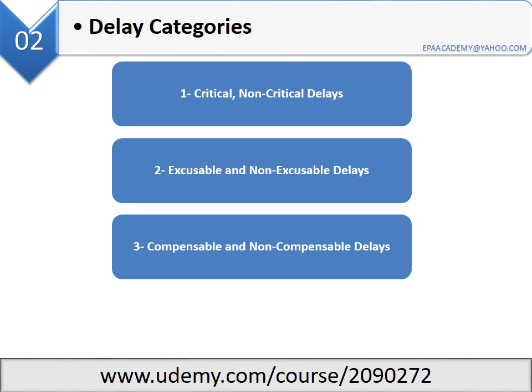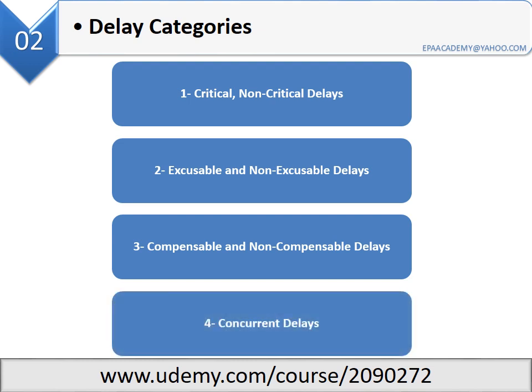Three — compensable and non-compensable delays. Compensable delays are delays where the delayed party is owed money to compensate for the loss due to the delay. Non-compensable delay is a delay where a time extension is owed but no compensation is owed to the delayed party. Four — concurrent delays: employer and contractor delays occurring concurrently.